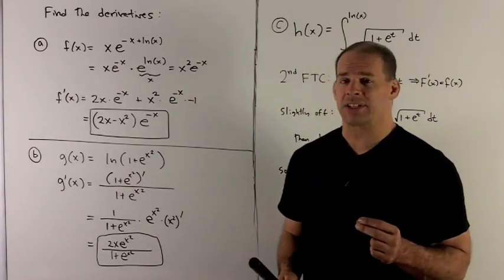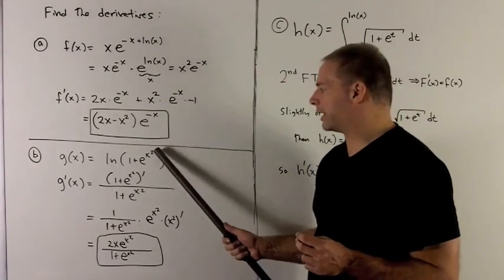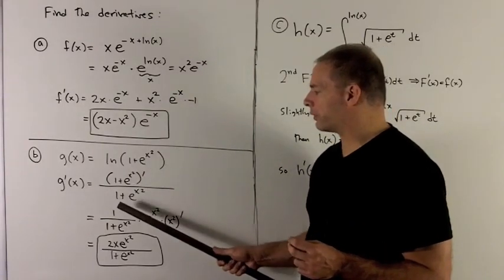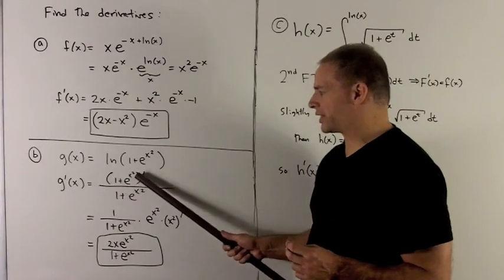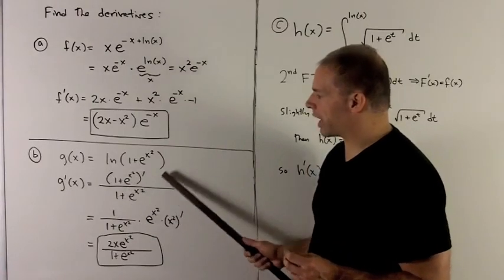What's the rule for natural log say? It's going to say take whatever's on the inside, flip it over, and then multiply by the derivative of the inside. So that's my first step.